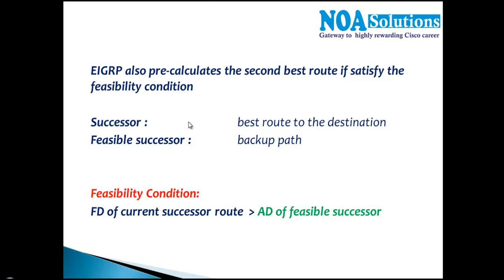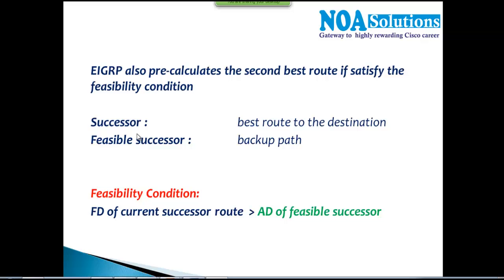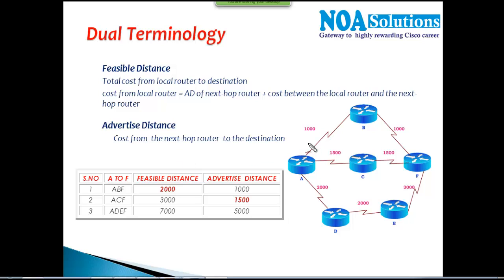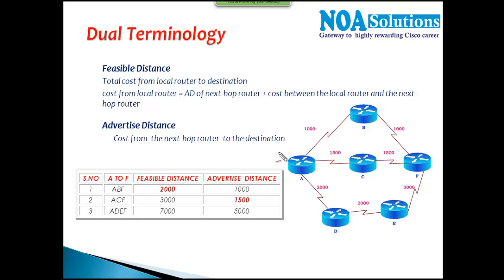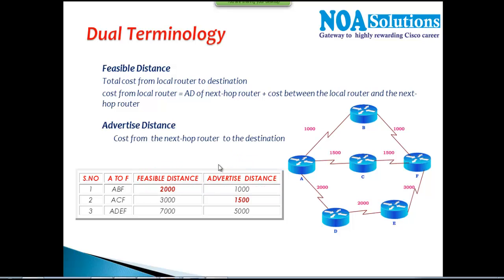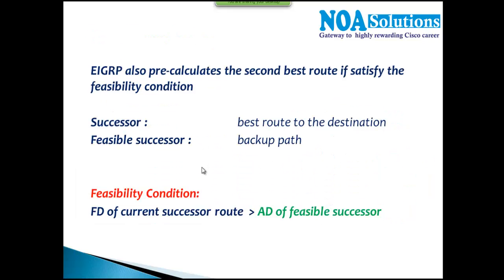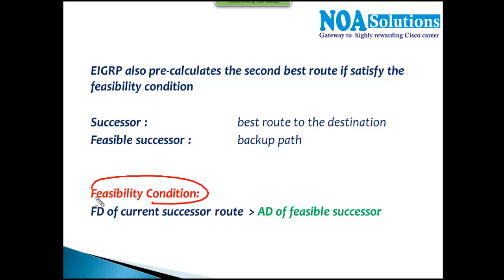In this video we continue with our discussion on feasibility condition. From the previous session, we covered feasible distance and advertised distance. Feasible distance is the total cost from our router to the destination, whereas advertised distance is the overall cost from the neighbor to the destination. EIGRP maintains both in its topology table. Now we will discuss feasibility condition and the difference between successor and feasible successor.